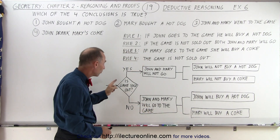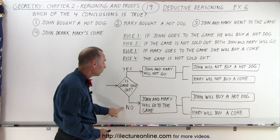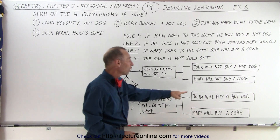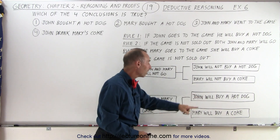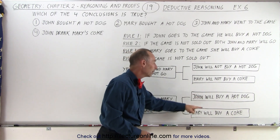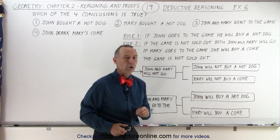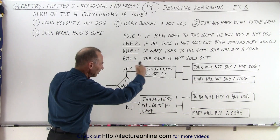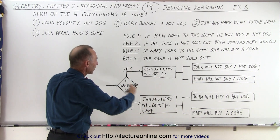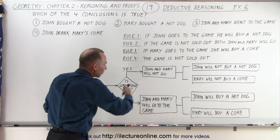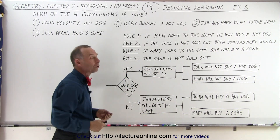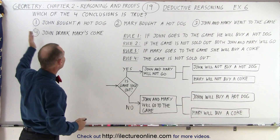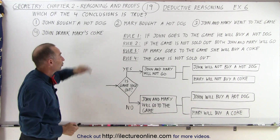But if the game is not sold out, then John and Mary will go to the game, John will buy a hot dog, and Mary will buy a Coke. That's the logic process we need to go through to determine if these four statements are true.